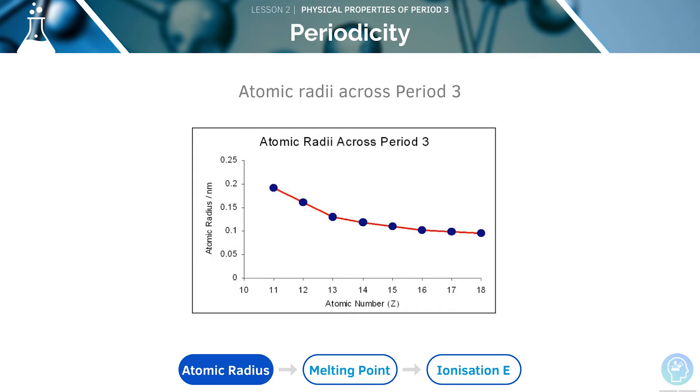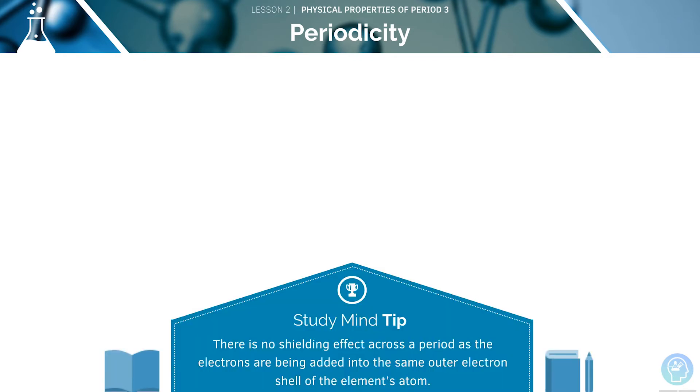This graph shows the trend of atomic radii across period 3. The atomic radius of the elements across period 3 will decrease as the result of the nucleus becoming increasingly positively charged. There is no shielding effect across a period, since the electrons are being added into the same outer electron shell of the element's atom.